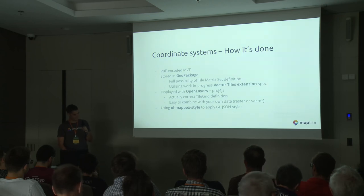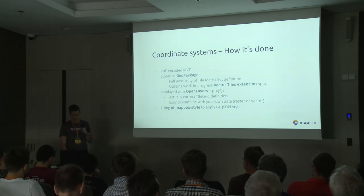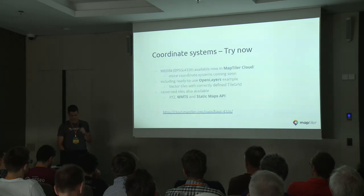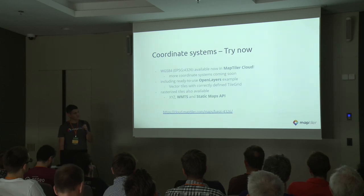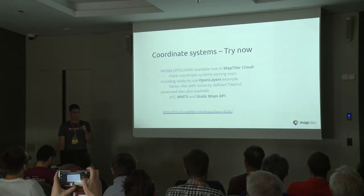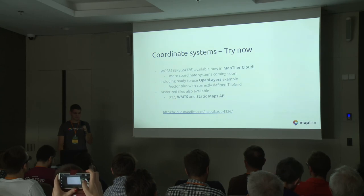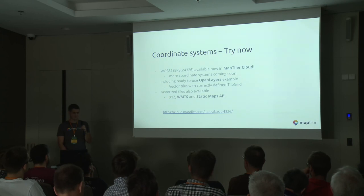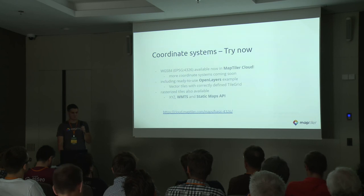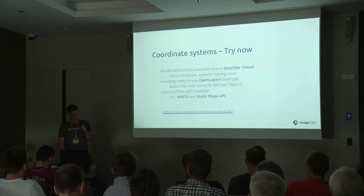It's still possible to use Mapbox GL JS styles because there's an open source mapbox-style library that can take the GL JSON style and apply the styling to the OpenLayers layer, so it can visually look almost the same as Mapbox GL JS. You can go to MapTiler Cloud right now and try it — we have processed the whole world into WGS 84. There's also a ready-to-use OpenLayers example including the tile grid definition, and we rasterize these tiles server-side so we can provide XYZ, WMTS, and static maps API.